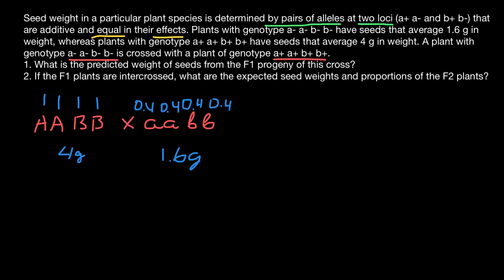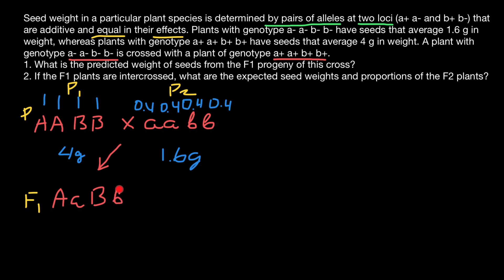That was the parental generation. Now we cross them to get the F1 generation. F1 plants receive one dominant allele A from parent one and one recessive allele a from parent two at locus A. For locus B, they receive one dominant allele B from parent one and one recessive allele b from parent two. So all plants in the F1 generation will have the same genotype: AaBb.